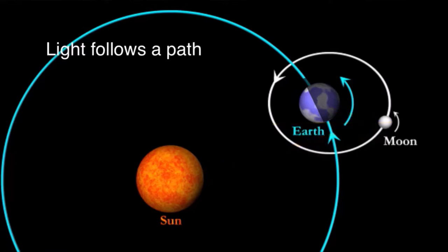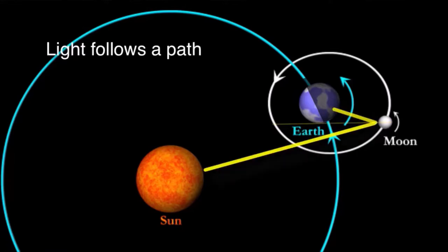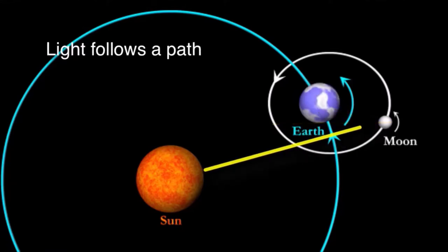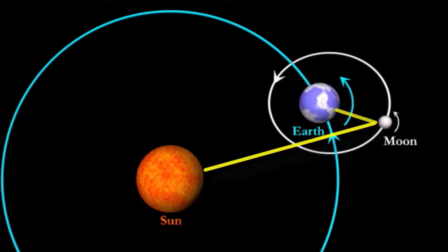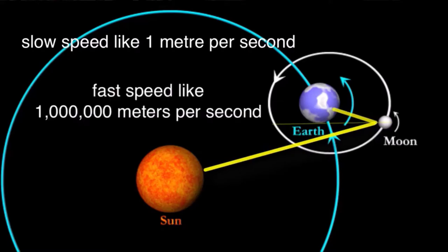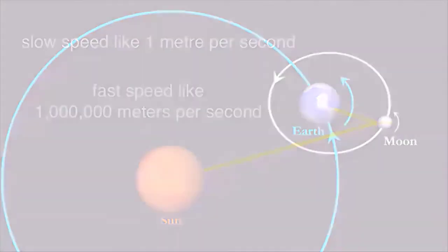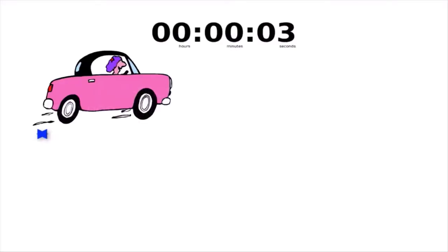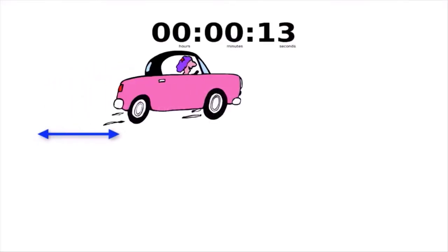Is this an instantaneous path, or does the light travel along this path with a finite speed, say a slow speed like one meter per second, or a fast speed, say a million meters per second?